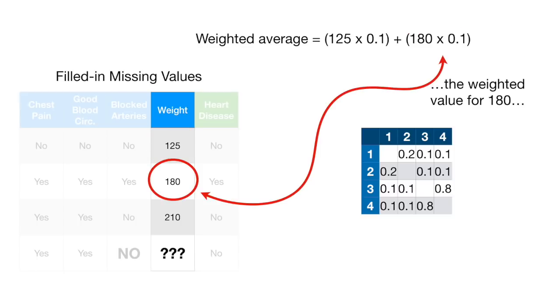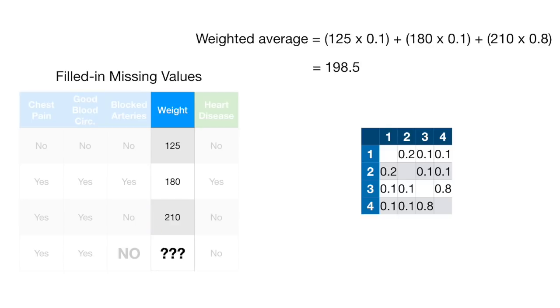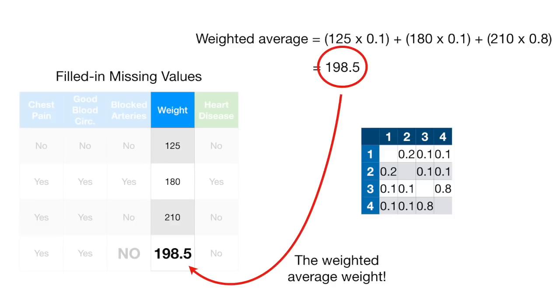Here's the weighted value for sample number 2, who weighs 180. Here's the weighted average value for sample number 3, who weighs 210. Ultimately, the weighted average of weight is 198.5. And remember, the weights that we used in the weighted average were based on proximities.